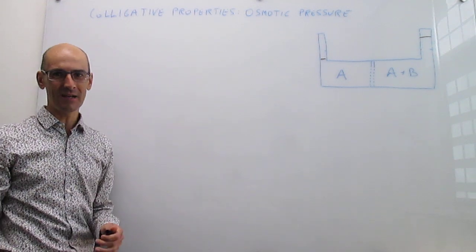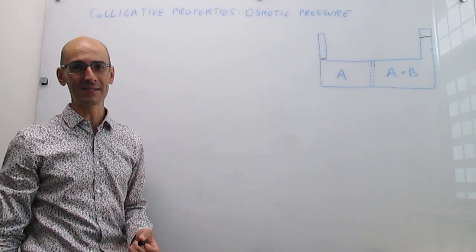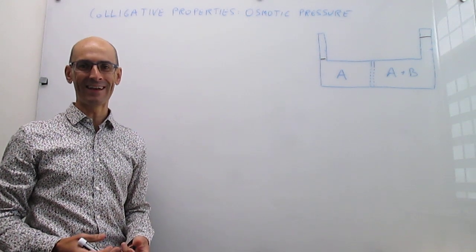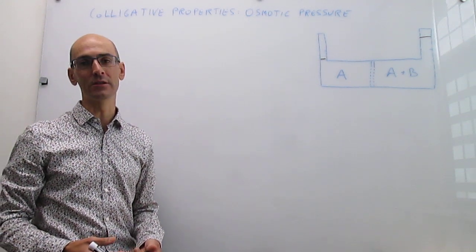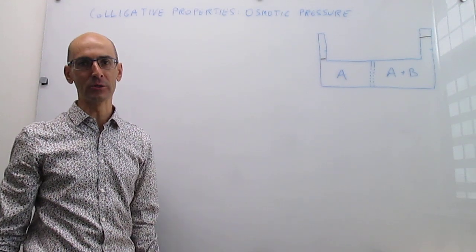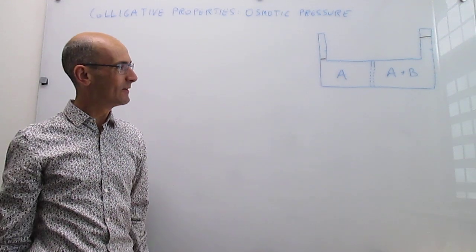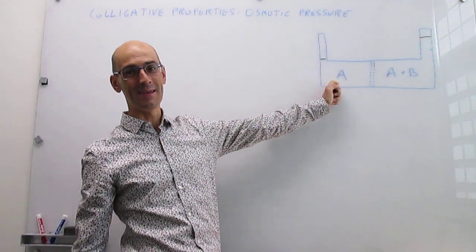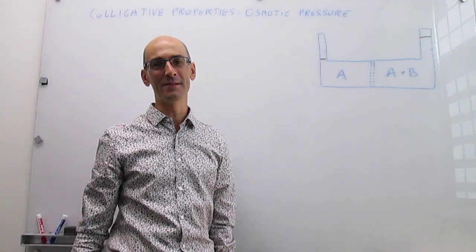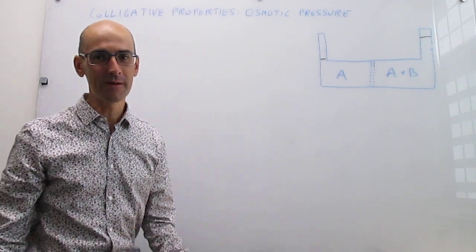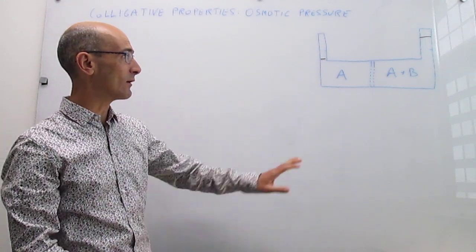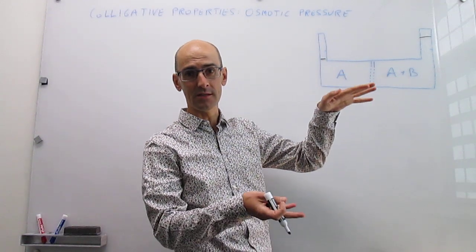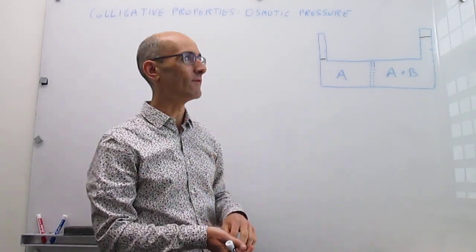Our thermodynamic analysis here is going to be based on the Gibbs energy and in this case the chemical potential. At equilibrium, the chemical potential of solvent A in the left and the right compartments has to be identical. We know that we are at equilibrium when the levels of these columns stop changing and equilibrate to a set value.